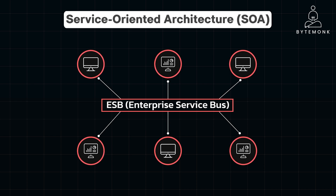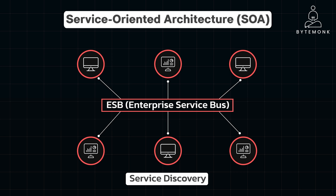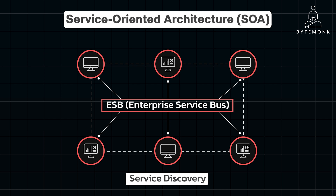Furthermore, in a distributed system, services need to find each other dynamically, often requiring a service registry or discovery mechanism. This adds complexity in terms of maintaining an up-to-date registry and ensuring services can find each other reliably. Additionally, communication over a network in SOA introduced latency compared to in-process calls within a monolith.